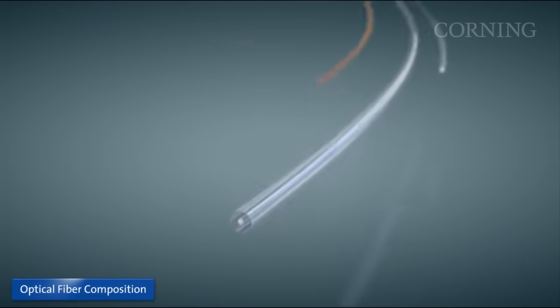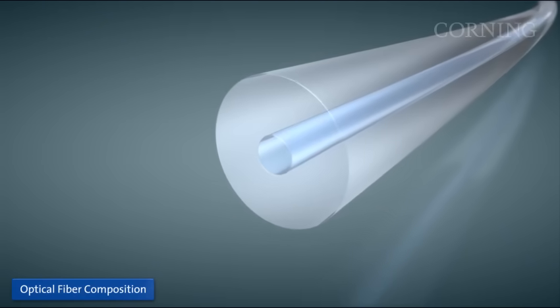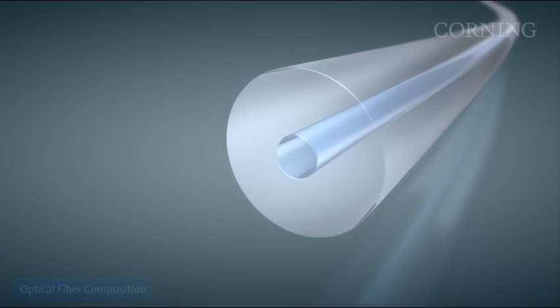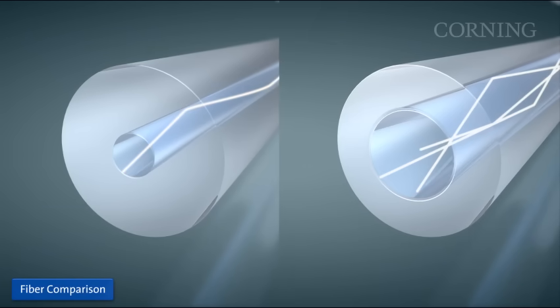Optical fiber is very thin. One strand is about the diameter of a human hair. It is comprised of two basic elements made of glass, the core and the cladding. The core, the center part of the fiber, is the area through which light signals are transmitted. The cladding layer completely surrounds the core, keeping the light from escaping.